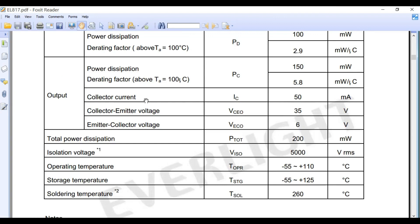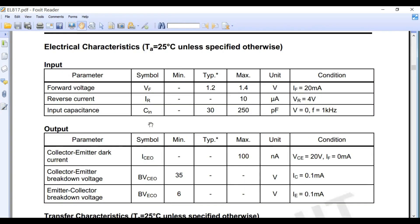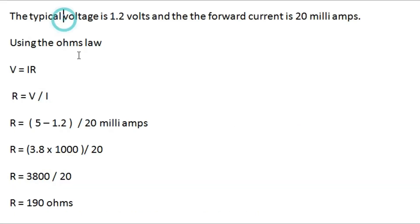Its maximum collector current IC is 50 milliamps and the collector-to-emitter voltage can be up to 35 volts. The forward voltage needed to turn on the infrared LED is typically 1.2 volts with a maximum of 1.4 volts, and its forward current is 20 milliamps. Since we are going to control this optocoupler using the Arduino, and the voltage available on any pin is 5 volts when turned on, this 5 volts can damage the infrared LED — so we need to use a current limiting resistor in series with the LED. Let's find the value of this resistor from the datasheet.